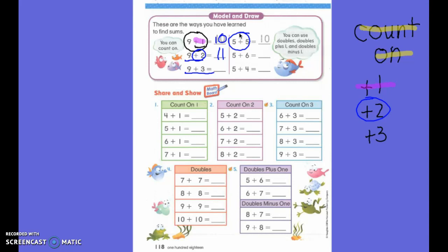What kind of math fact is it? It is a double because both of them are the same. When I think of 5 and 5, I think of my fingers. I've got 5 on this hand and I have 5 on this hand. So 5 plus 5 equals 10.